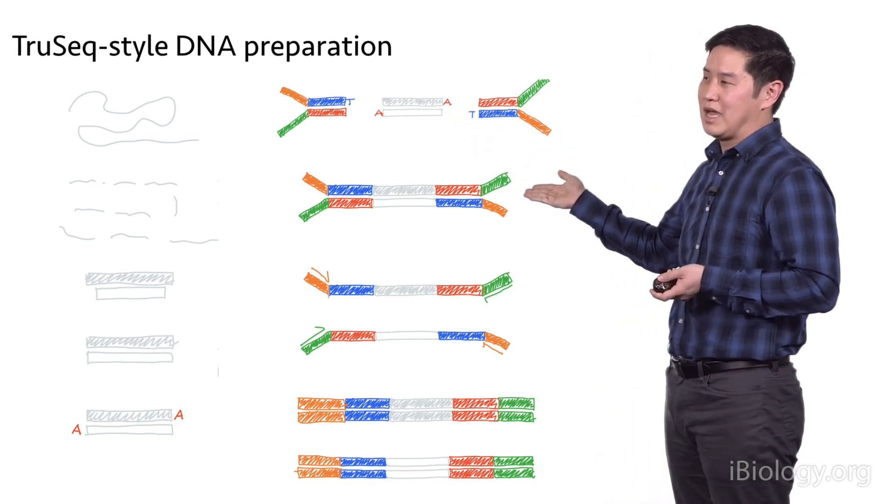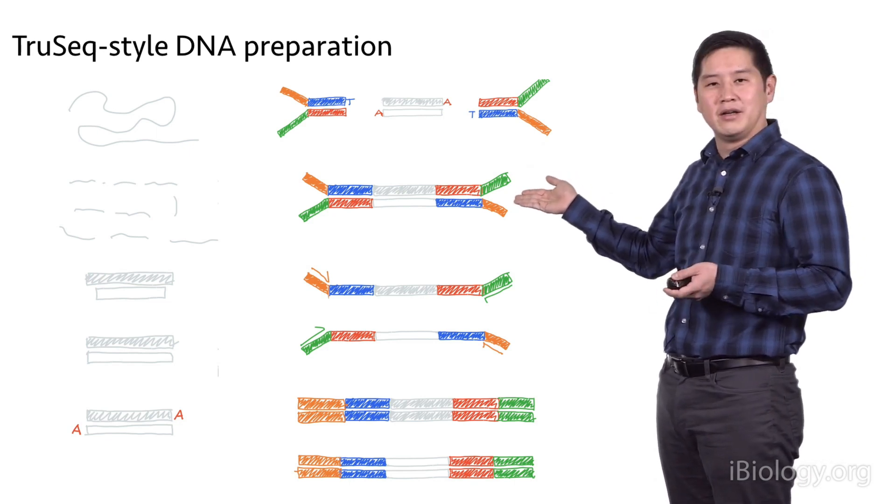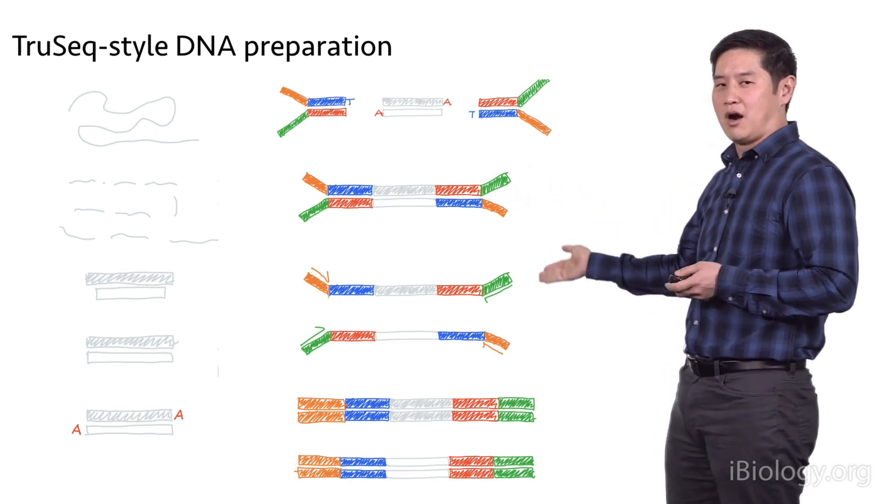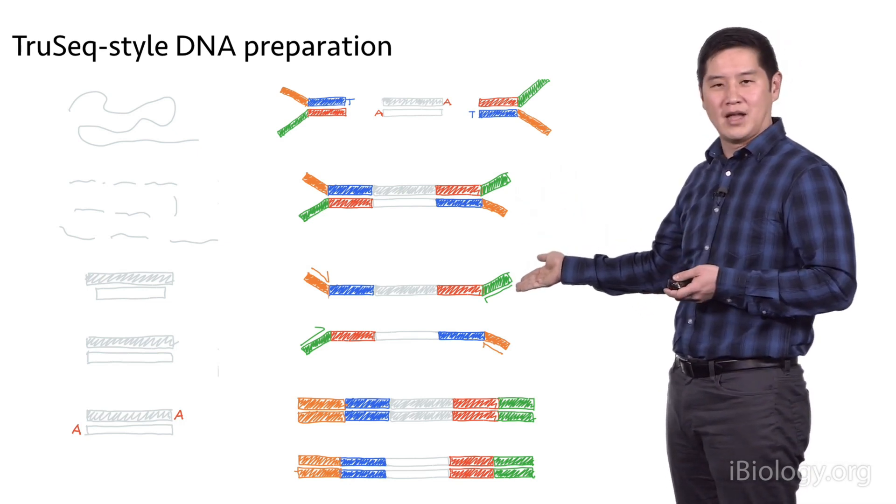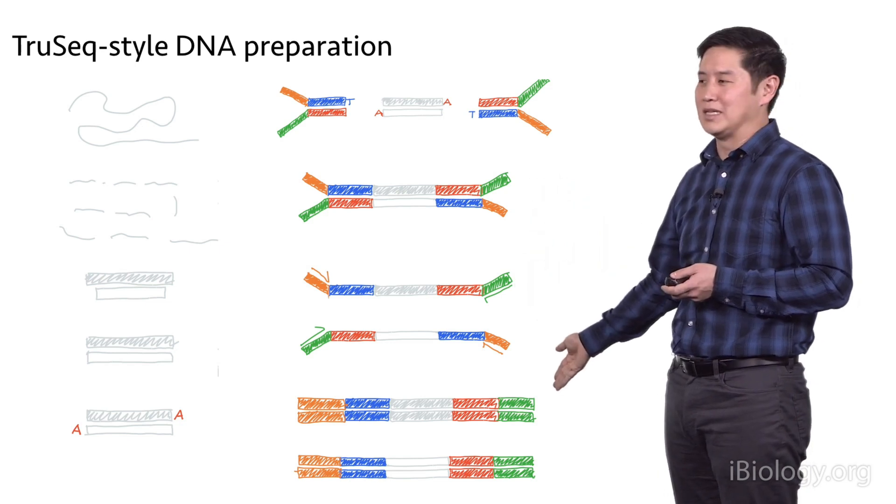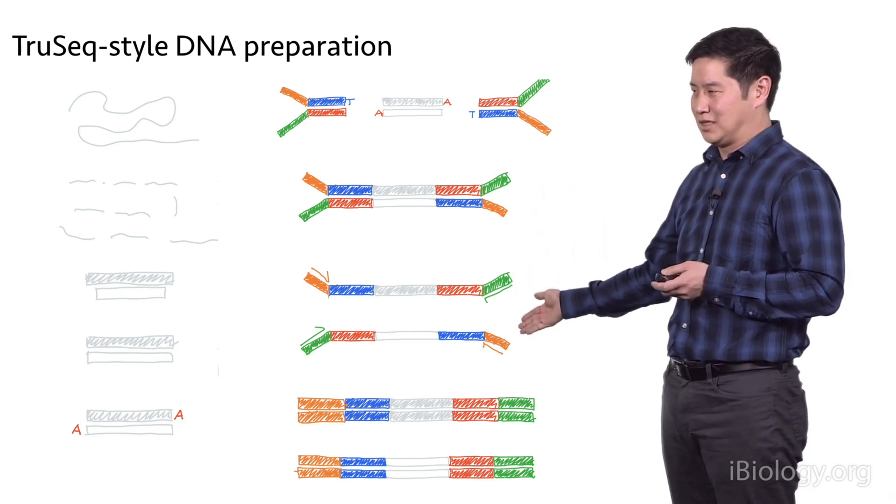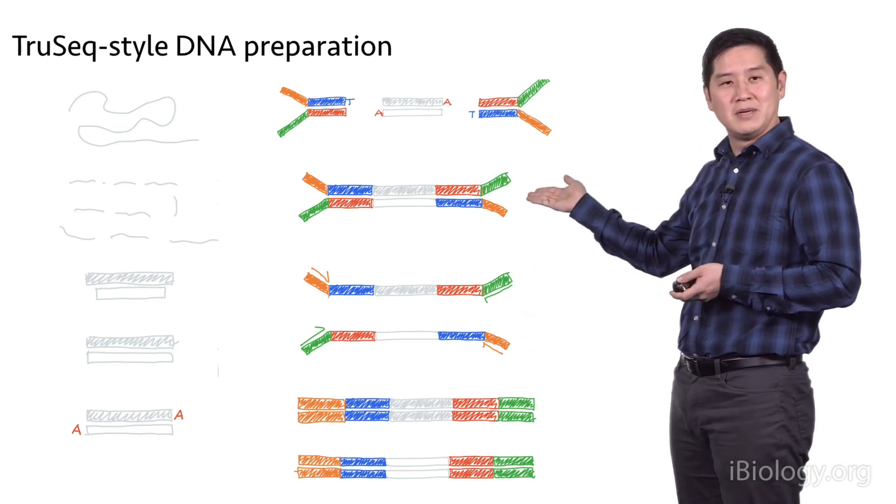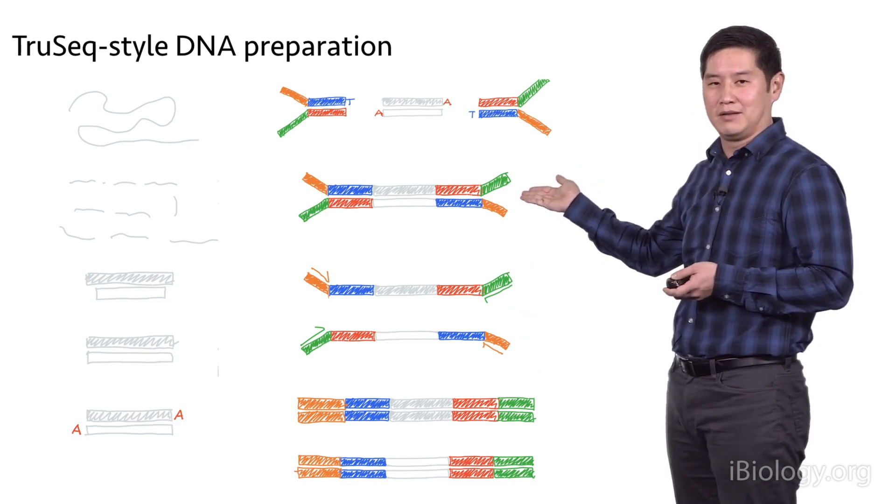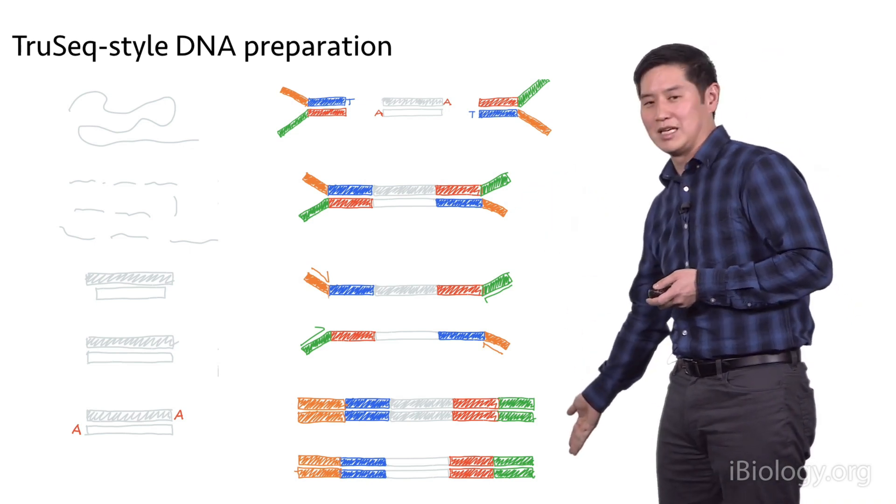At this point, you have a complete library that can go on for sequencing. If you don't have enough material, you can amplify this up using PCR, using primers that prime off of the adapter sequences you've ligated on, and you can generate many copies. This would be a PCR prep to do the amplification. You can also have PCR-free preps where you don't do any PCR amplification if you have enough material. Both of these molecules can go on to the sequencer.